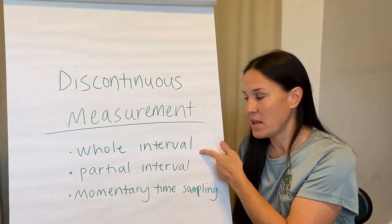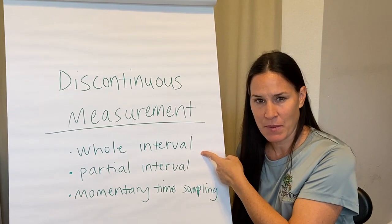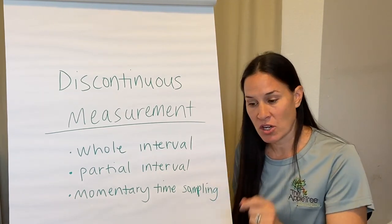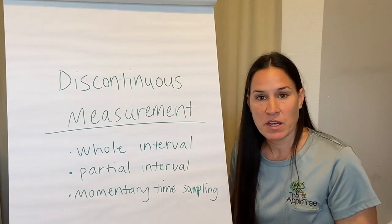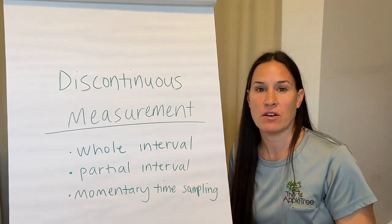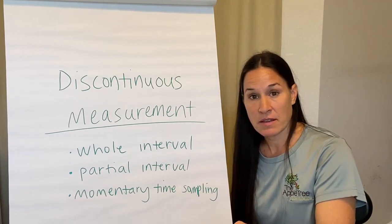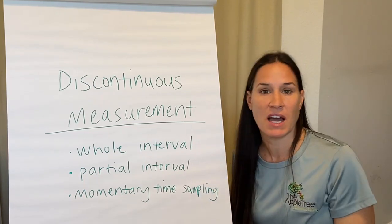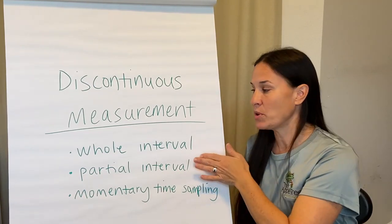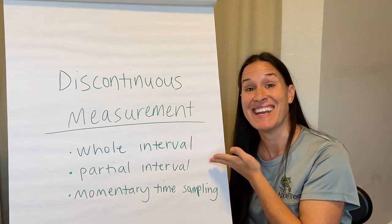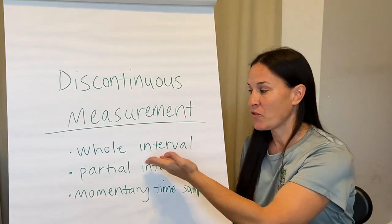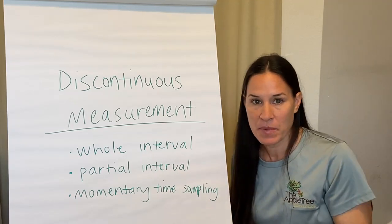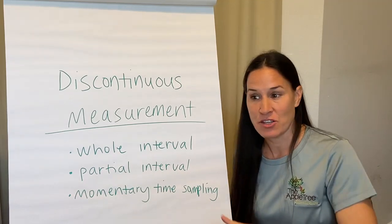If your client is in their seat for the whole interval, they get a check or a yes. But if your client gets out of their seat at any time, you put an X. Let's say your interval starts, you're five seconds in, and your client gets out of their seat — X. You're not recording how long they were out of their seat or how many times they got in and out. You're simply saying it met the criteria or did not meet the criteria for being in their seat for the whole interval. You're not collecting data on every instance of in-and-out-of-seat behavior — just whether it met the criteria or not.